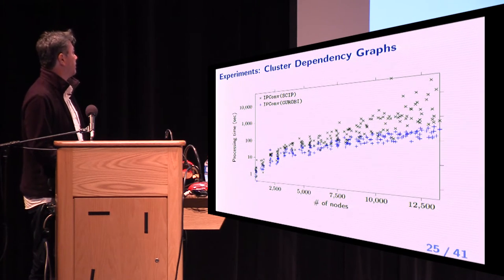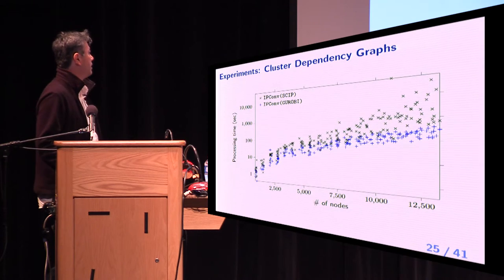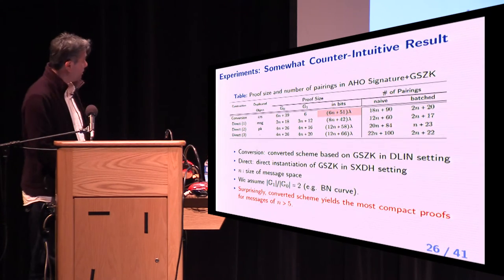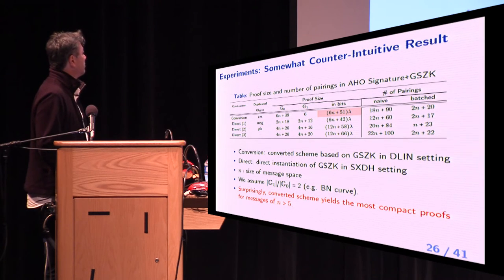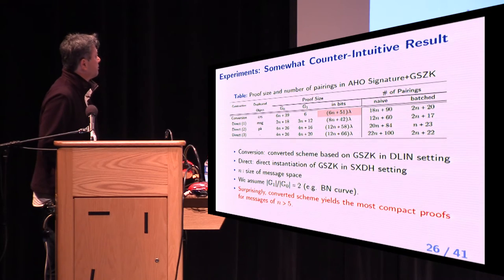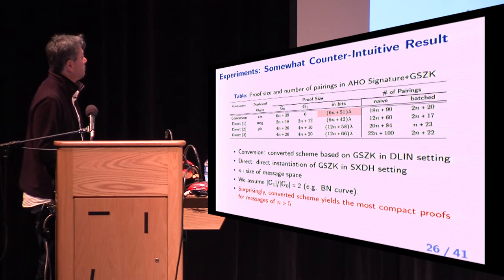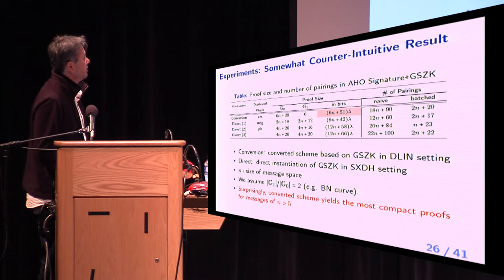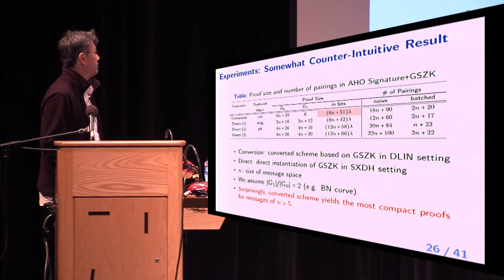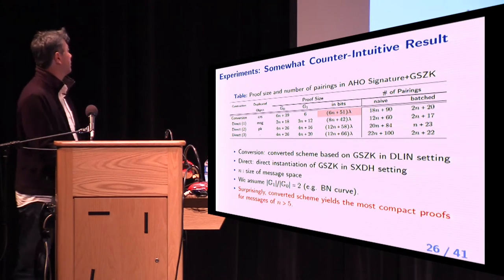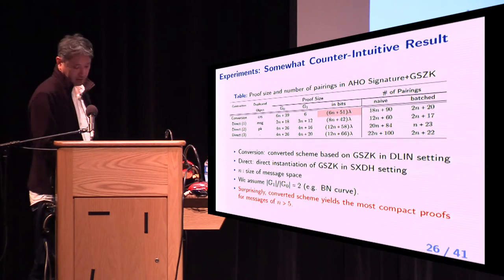And this is performance for scalability. I think at least IP-conv with commercial solver still keeps good performance. And this table is somewhat counter-intuitive results. Conversion means converted scheme based on Groth-Sahai zero-knowledge proof in D-linear setting. And direct means direct instantiation of Groth-Sahai zero-knowledge in SXDH setting, which is usually more compact than D-linear setting. Surprisingly, converted scheme yields the most compact proofs.